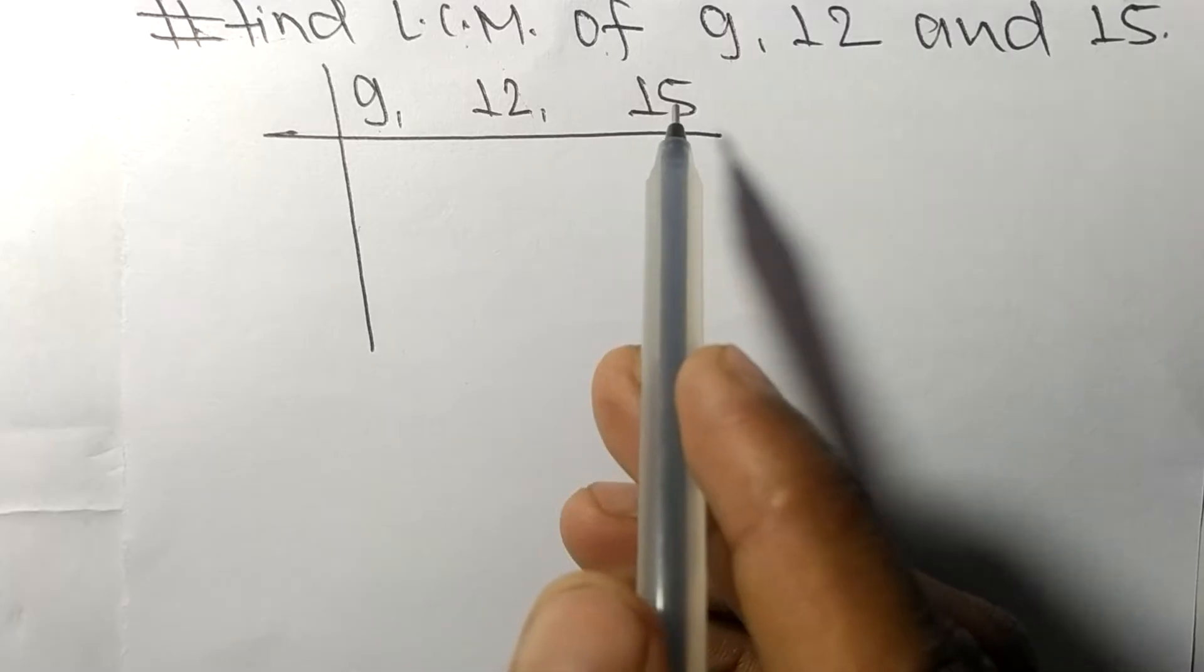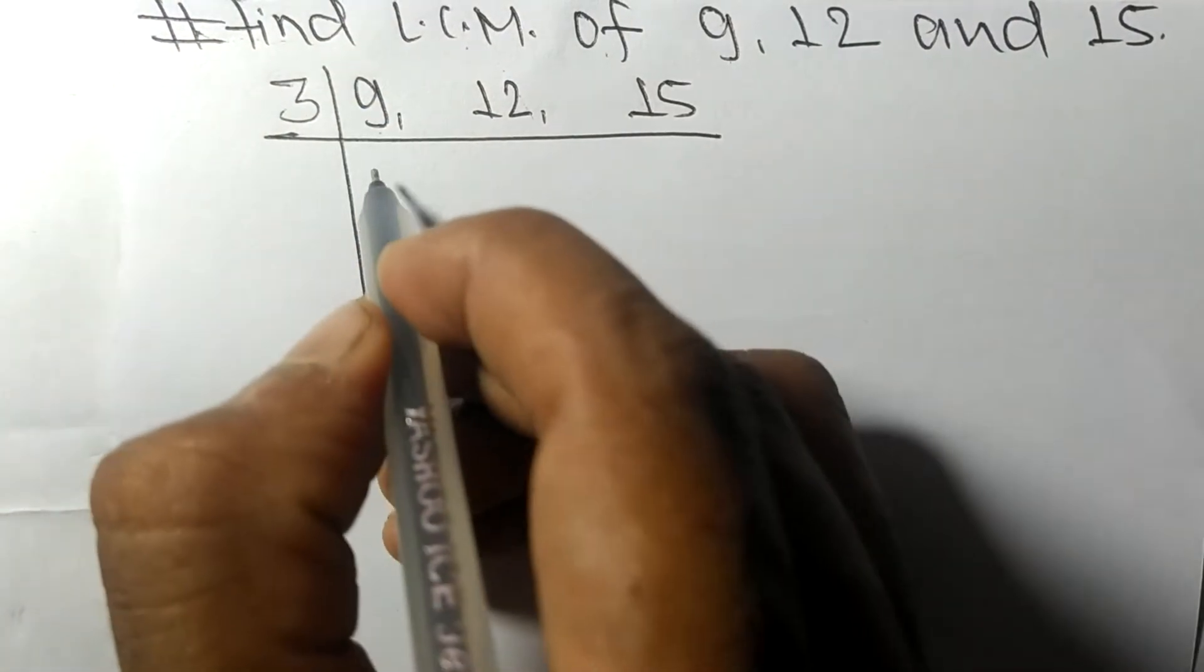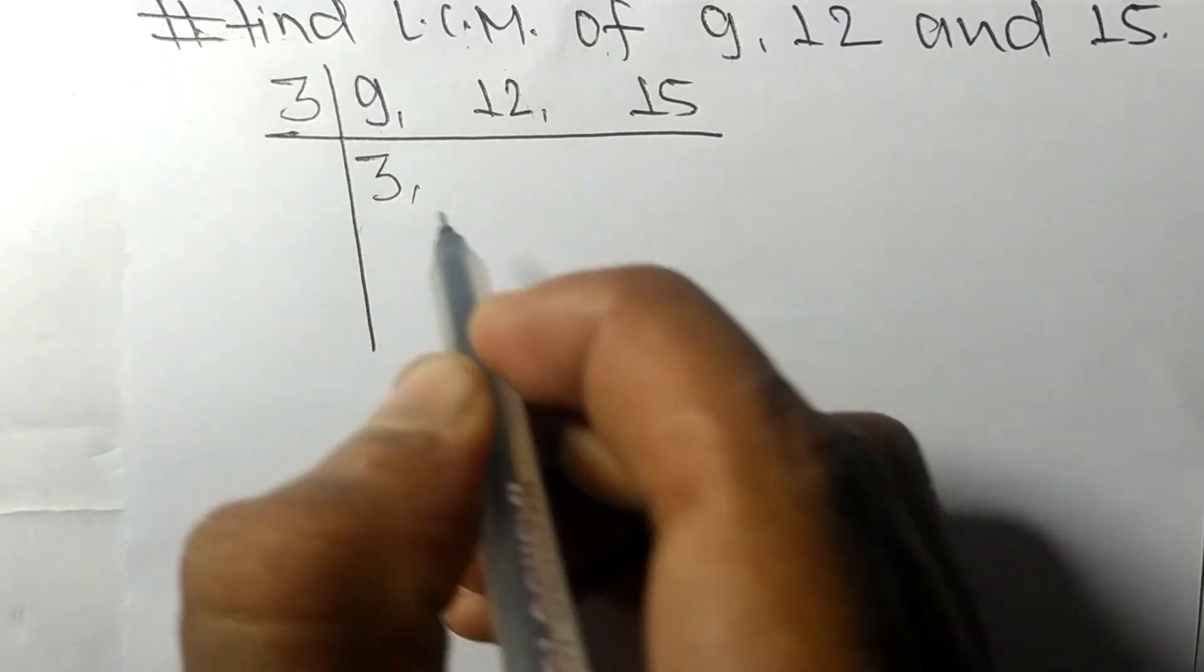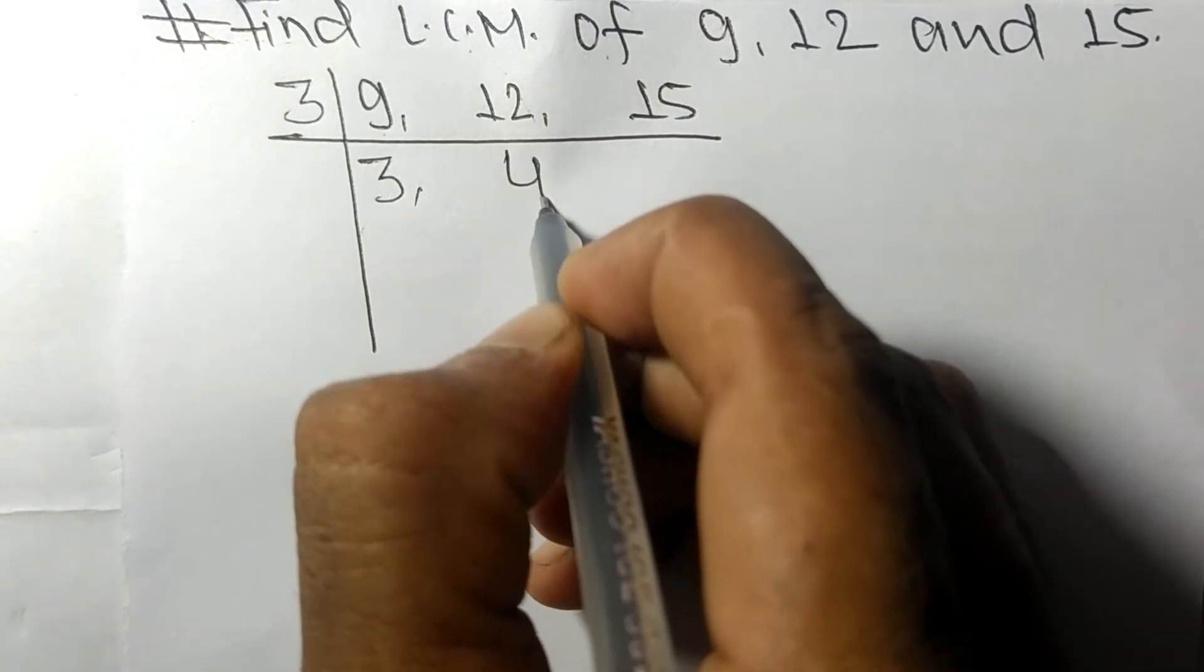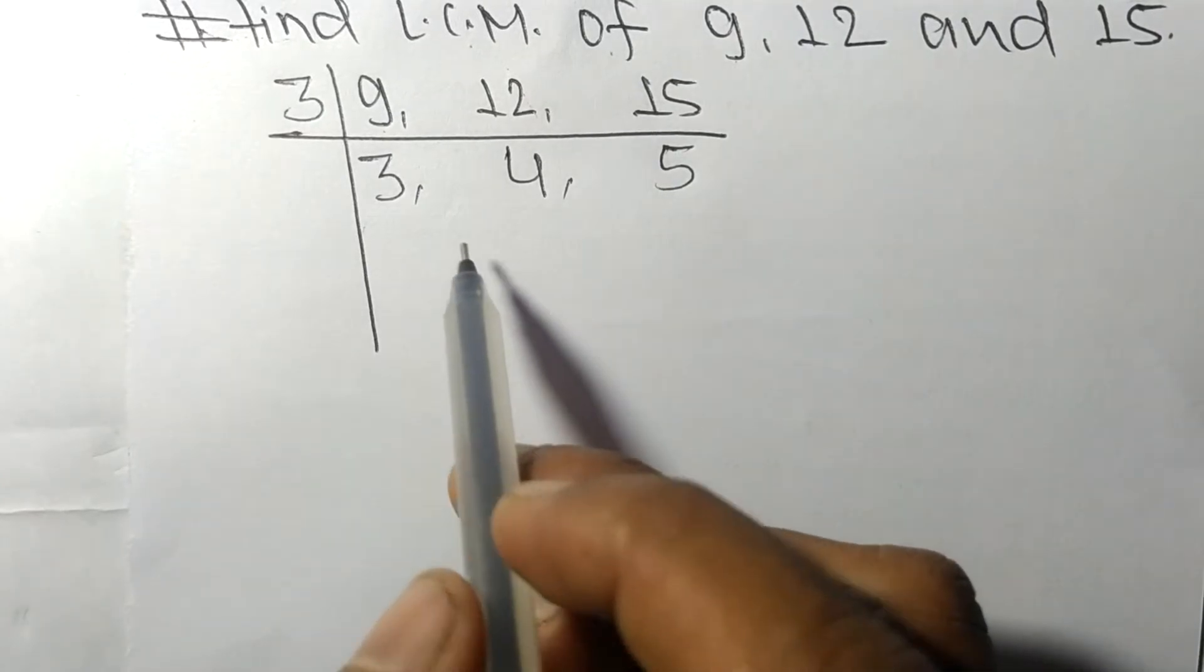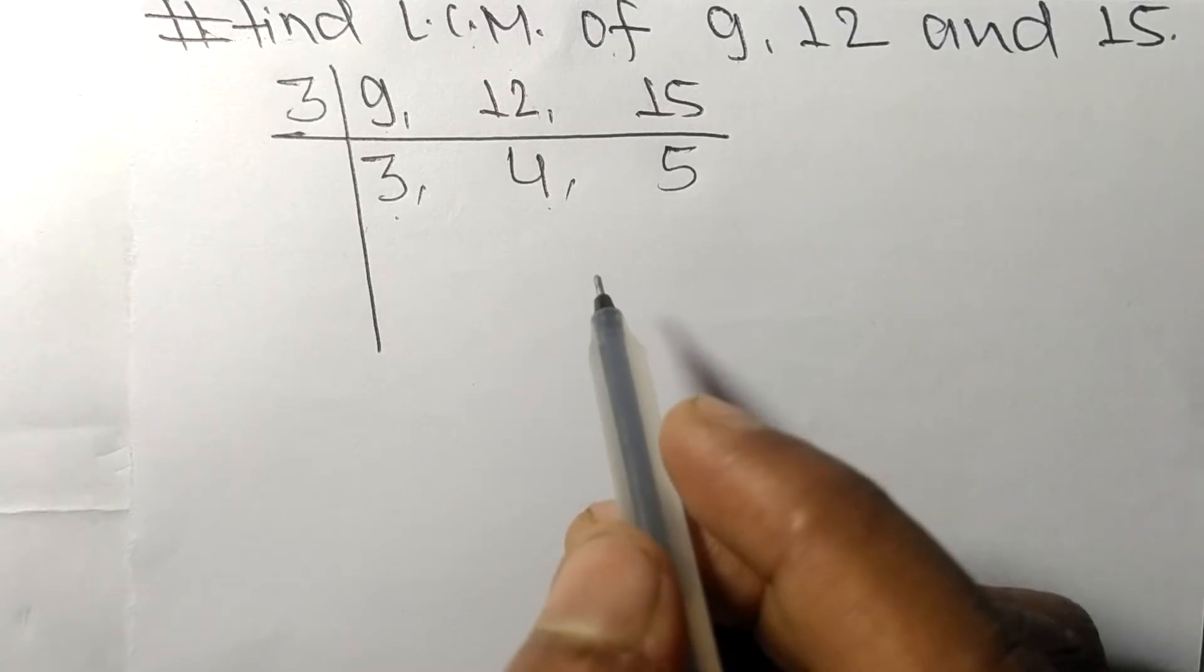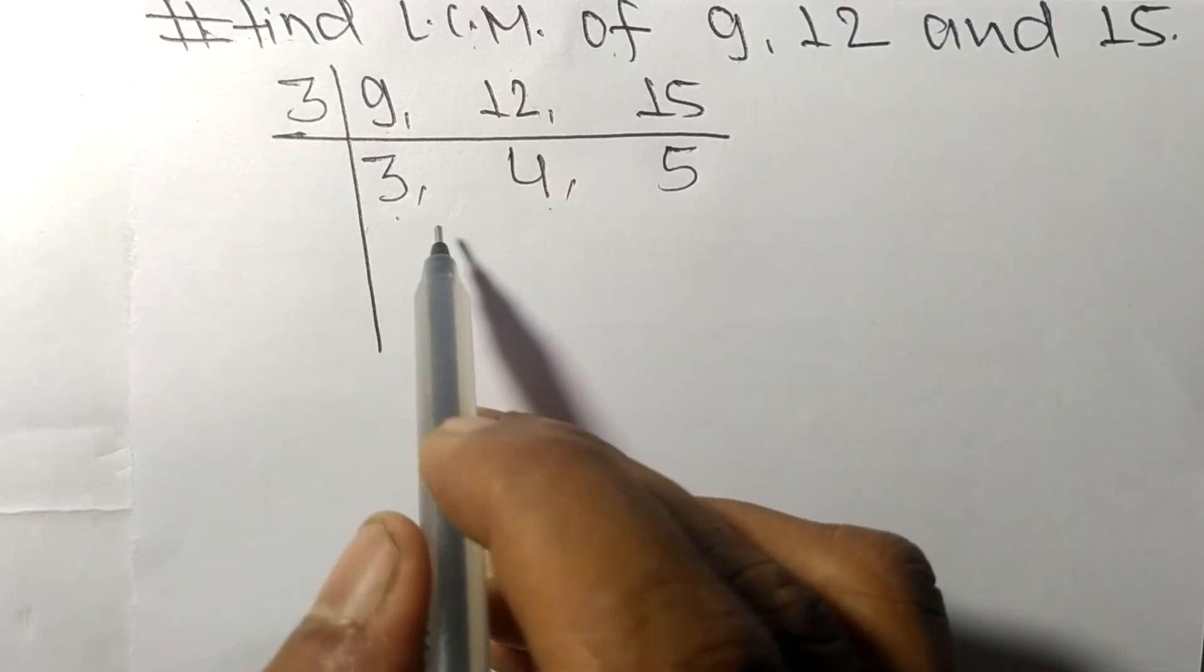9, 12, and 15 are exactly divisible by 3. 3 times 3 means 9, 3 times 4 means 12, 3 times 5 means 15. So now we got 3, 4, and 5, which are not exactly divisible by the same number.